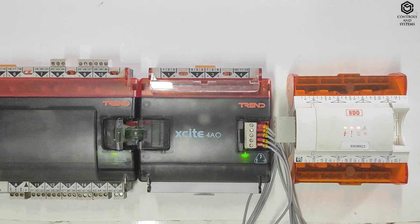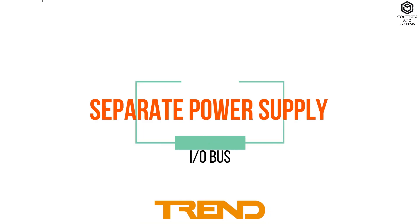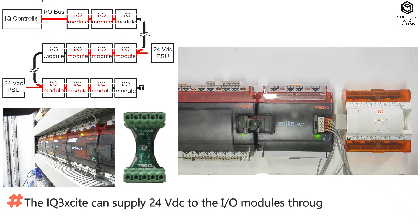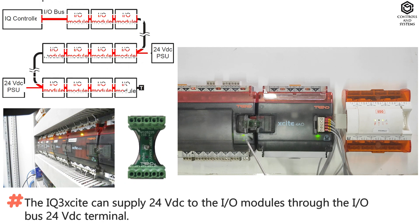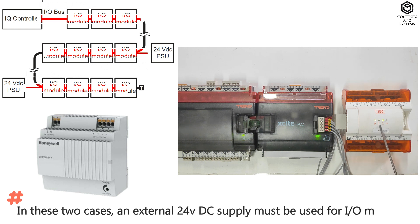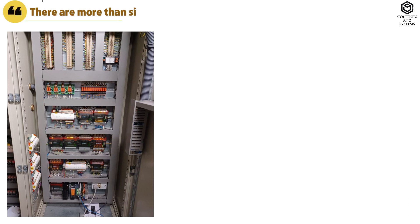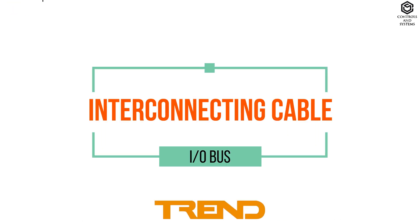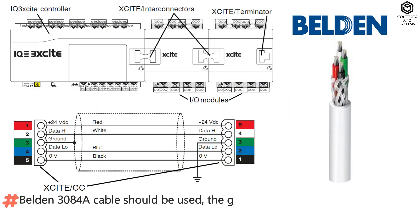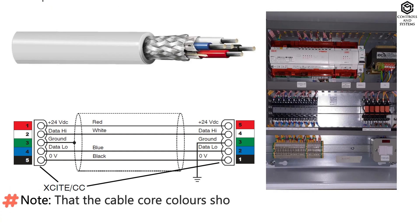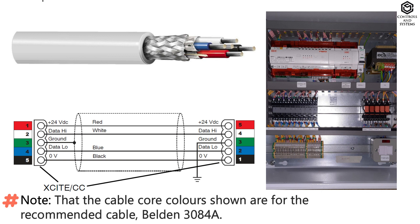Now switch on the IQ3 X-Site controller power supply. Separate power supply: the IQ3 X-Site can supply 24V DC to the I.O. modules through the I.O. bus 24V DC terminal. In these two cases an external 24V DC supply must be used for I.O. modules: first, when there are more than 6 I.O. modules; second, when the main controller combined supply would be overloaded. Interconnecting cable: Belden 3084A cable should be used. The ground connector should be earthed locally and the cable screen should be grounded at the controller end.